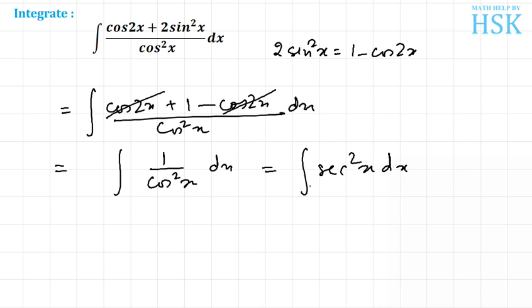We know that the integration of sec squared x is tan x. On applying the direct formula, this will be equal to tan x plus c. So this is my required answer.